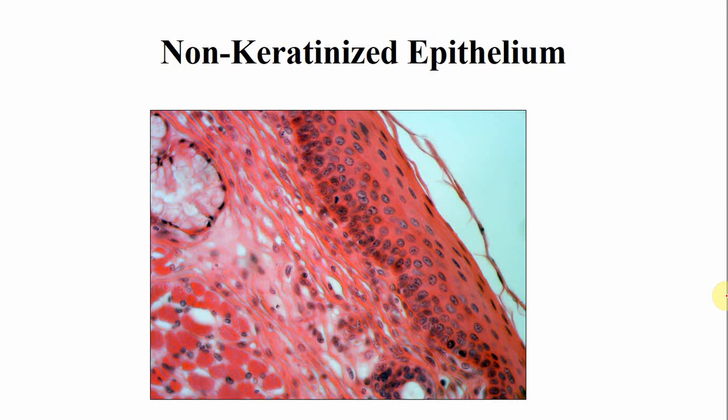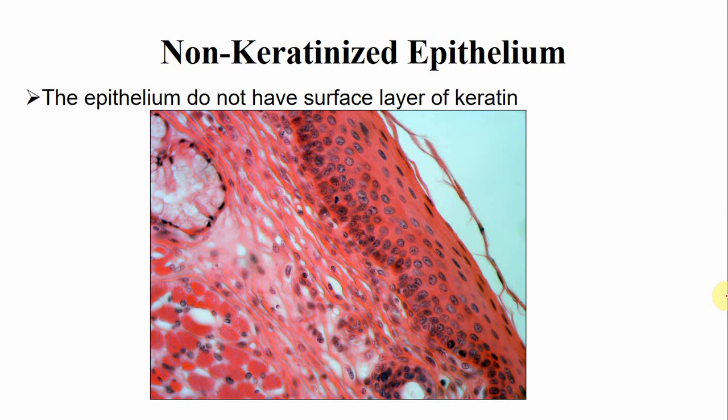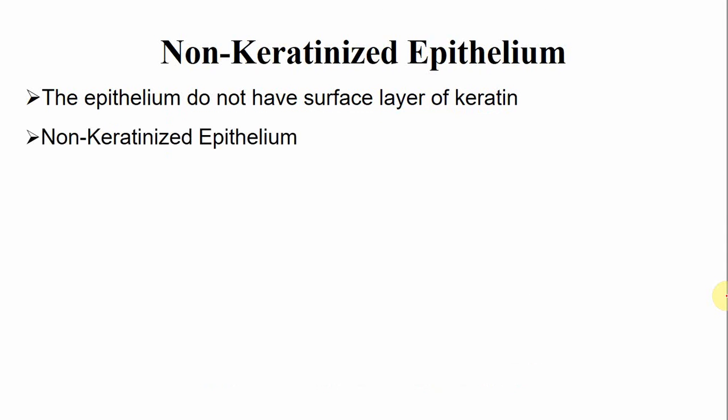The non-keratinized epithelium also comprises four cell layers, but the epithelium does not have any surface layer of keratin. The non-keratinized epithelium lines the areas of the lining mucosa, like the buccal mucosa, alveolar mucosa, and the soft palate.